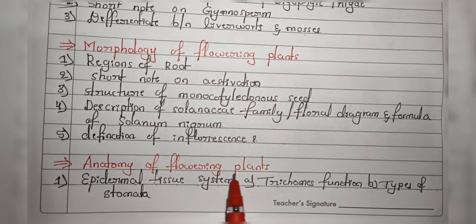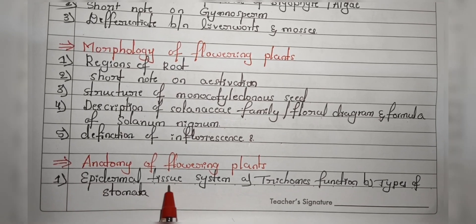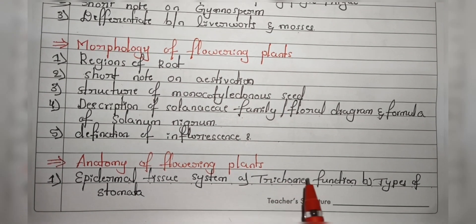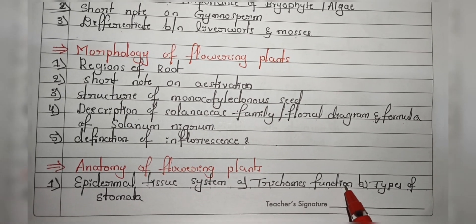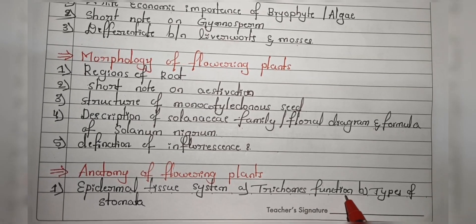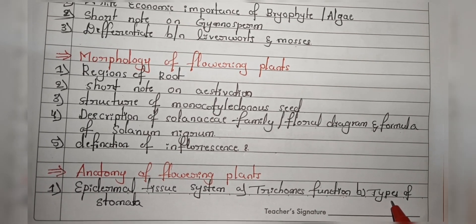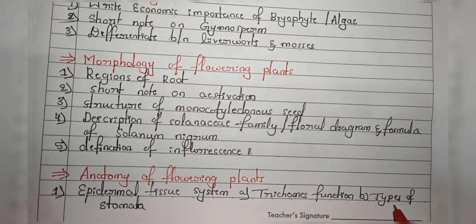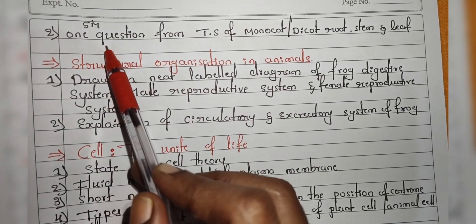Next chapter is Anatomy of Flowering Plants. They will ask questions on the epidermal tissue system. In the epidermal tissue system, they will ask about the function of trichomes — what is the function of trichomes — and sometimes the definition plus trichome function. Next, they will ask about the types of stomata. There are two types: one is normal bean shape or kidney shape, and another is dumbbell shape.